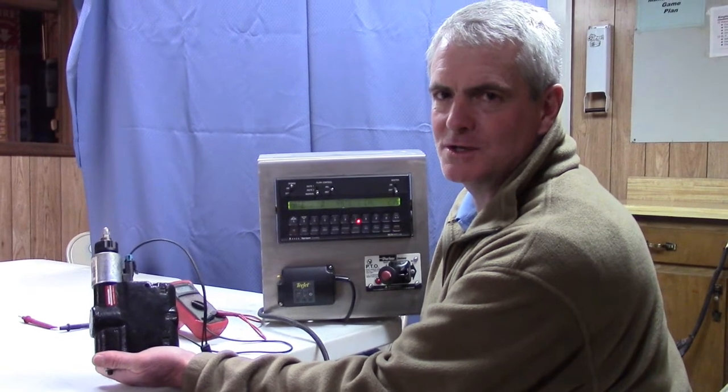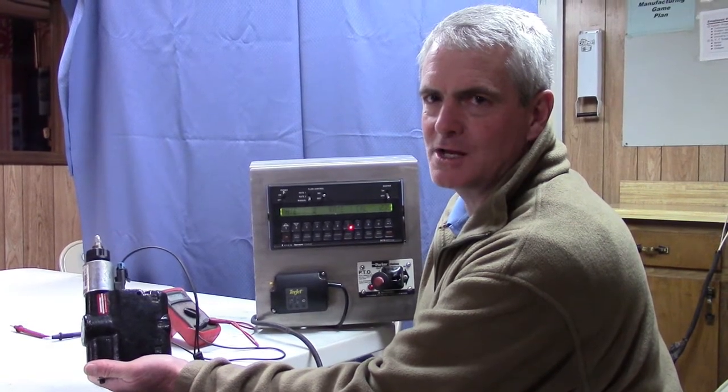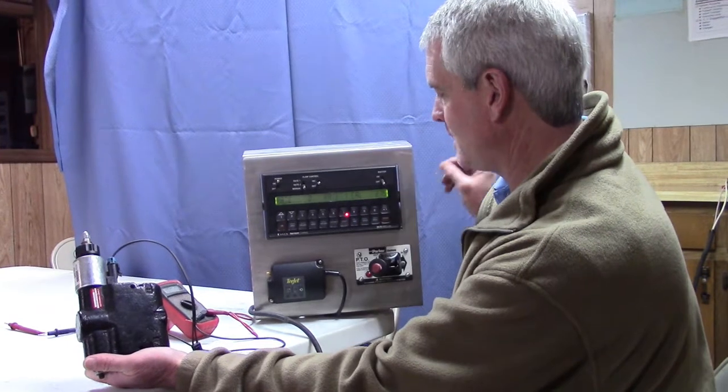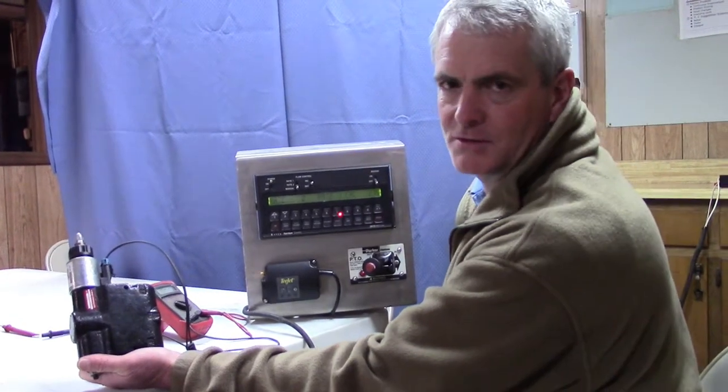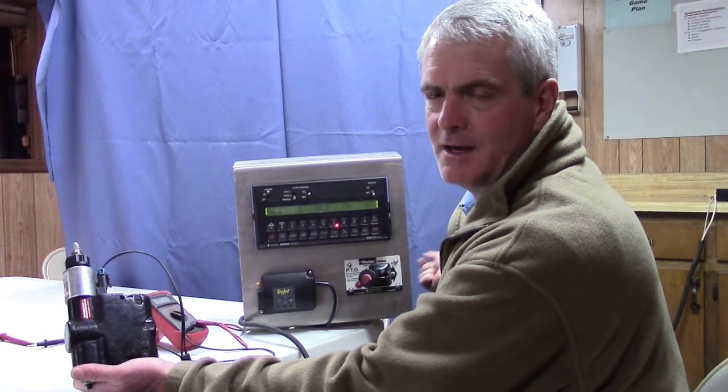This video is to talk about troubleshooting a PWM valve, a pulse width modulating valve. This is a Raven 660 and I've got it run to a converter, just plugging it into the wall, converting electricity from AC to DC.